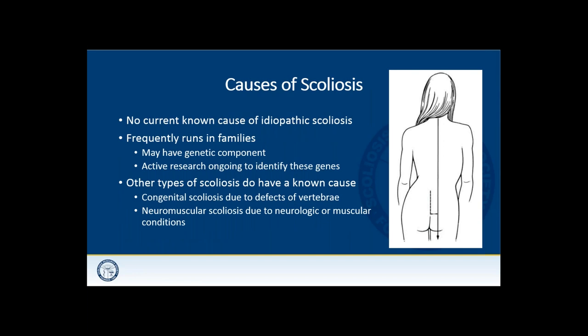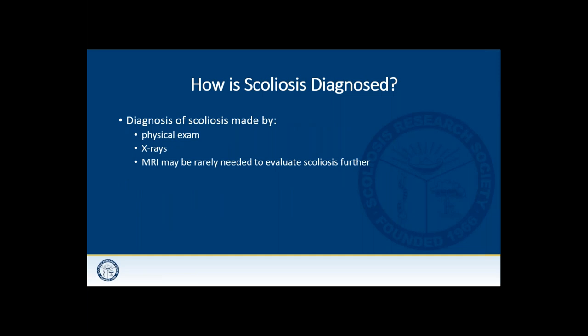There is no current known cause of idiopathic scoliosis — that's why it's called idiopathic. Frequently it does run in families and there may be a genetic component, with a lot of ongoing research trying to identify these genes. There are other forms of scoliosis we do know about: congenital scoliosis is due to defects in vertebrae and typically presents in a younger population, and neuromuscular scoliosis may be due to neurologic or muscular conditions.